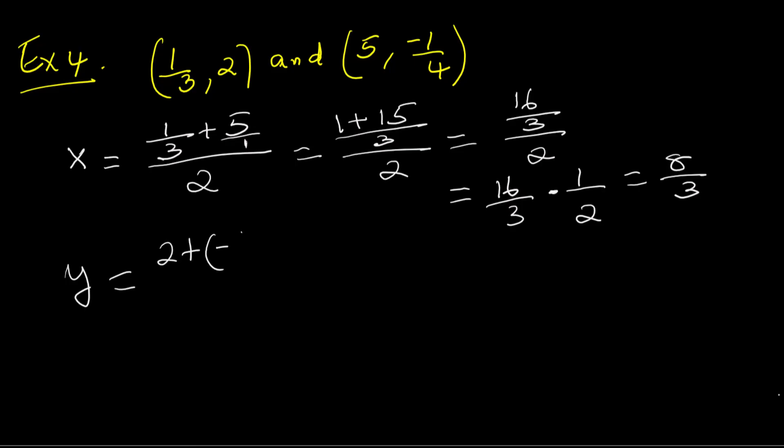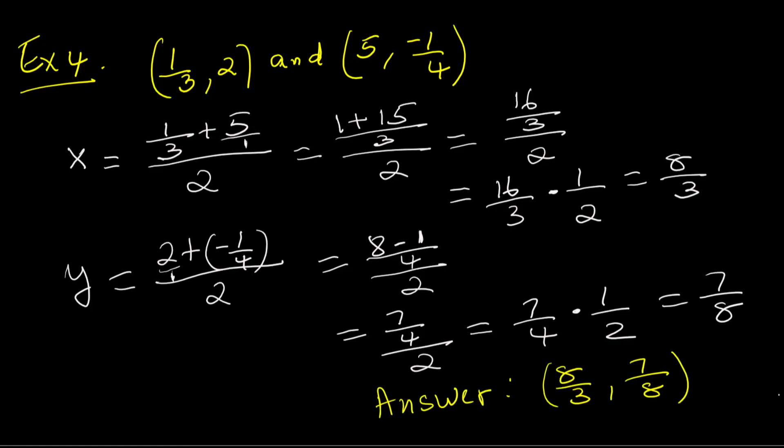Now the y values, 2 plus -1/4, divide by 2. Rewrite 2 as 2/1. Now do cross multiplication, 2 times 4 is 8. 1 times -1 is -1. Now subtract, 8 minus 1 is 7. Place it over 4, that gives us 7/4. Now divide 7/4 by 2. Now multiply 7/4 times 1/2. 7 times 1 is 7. 4 times 2 is 8. Y value is 7/8. The midpoint is (8/3, 7/8).